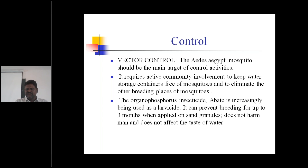You can use Abate, which is a larvicide. It can prevent breeding for up to three months. When applied on sand granules, it does not harm humans and does not affect the taste of water. Abate is the best one you can use to prevent mosquito breeding for three months.